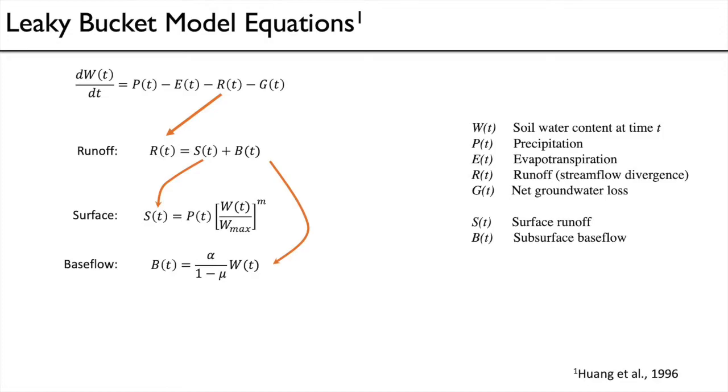And here are the equations, some of the basic equations that are used in this leaky bucket approach, which we've already talked about the first equation. So change in moisture content through time, dW(t)/dt, is going to be some function of the precipitation at that time minus evapotranspiration minus runoff minus groundwater loss to the subsurface unobservable groundwater loss.